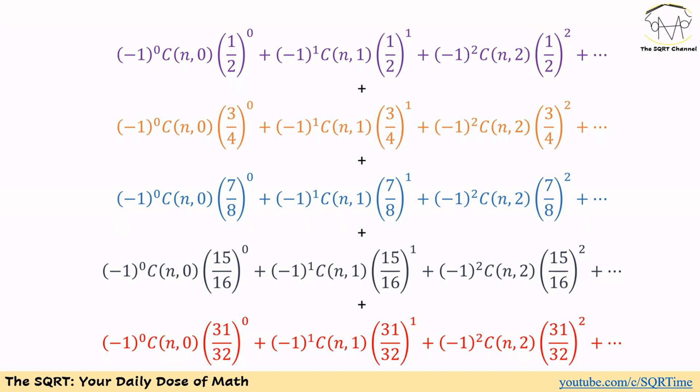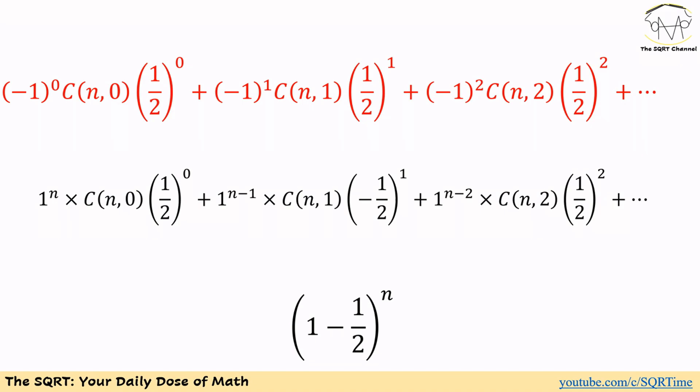Now we solve each expression separately. For the purple expression, the first term is minus 1 to the power of 0 times n choose 0 times 1/2 to the power of 0, the second term is minus 1 to the power of 1 times n choose 1 times 1/2 to the power of 1, and so on. We can factor out the minus signs by writing minus 1 to the power of k applied to 1/2 to the power of k.